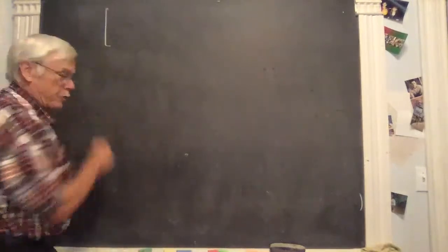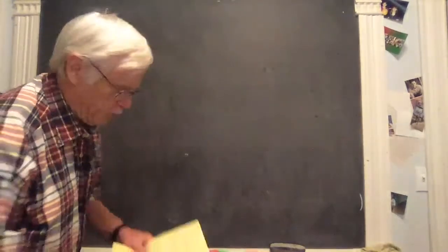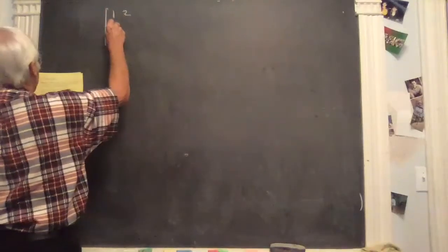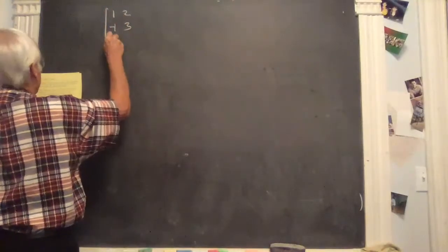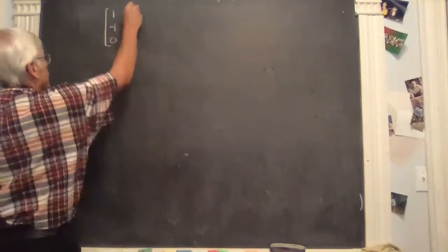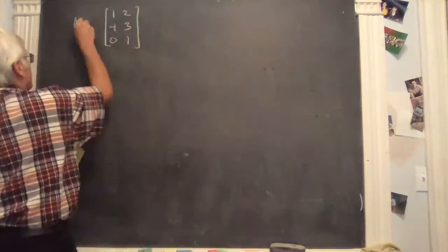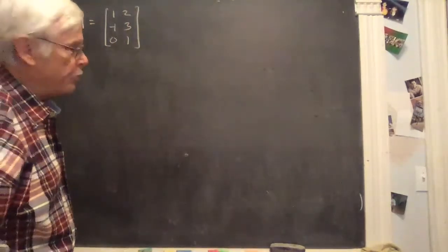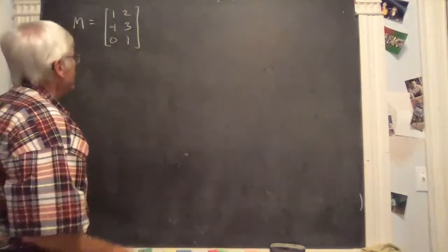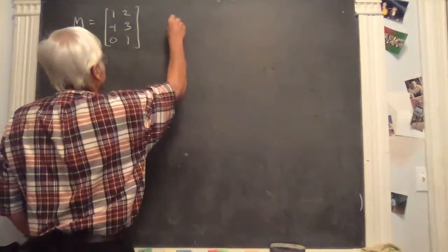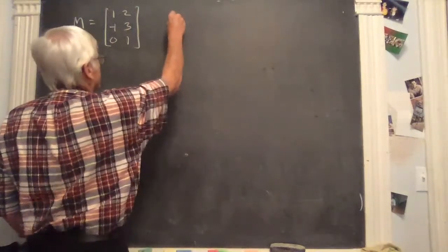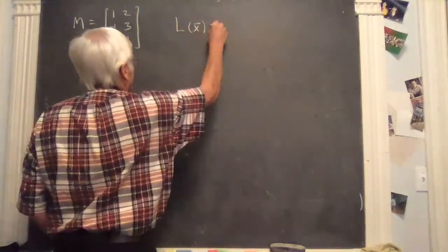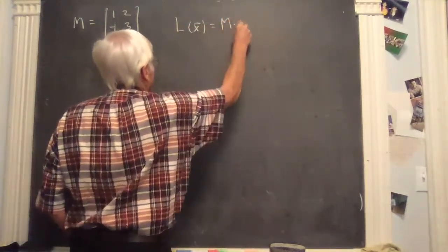So if we start with a particular matrix — and I'll use this one over and over today — 1, 2, minus 1, 3, 0, 1. This is a matrix M. What does it mean for this matrix to represent a function? It means that a function L, where L of any vector x is M times x.